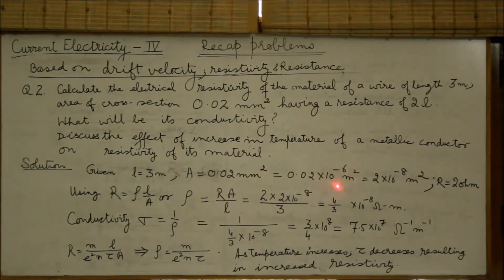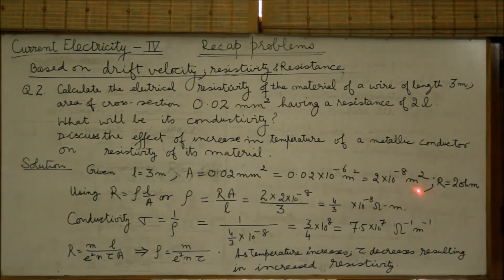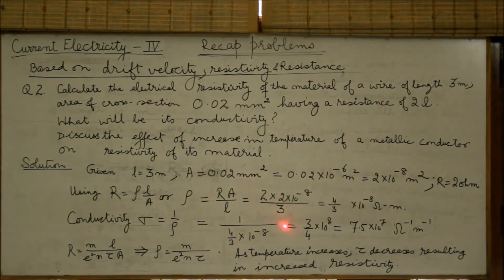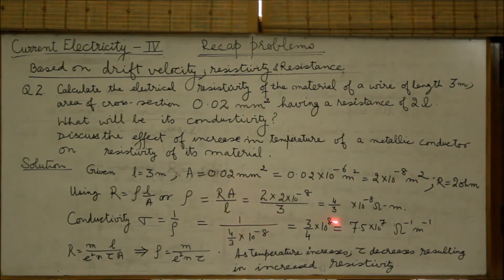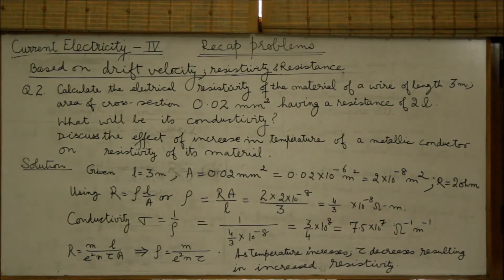The area is 0.02 millimeter square, that gives you the area as 2 into 10 to the power minus 8 meter square. The resistance of the wire is given to be 2 ohms. Using the relation R equals rho L by A, we get rho equals R A by L. Simple substitution of the values will lead you to the resistivity as 4 over 3 into 10 to the power minus 8 ohms meter.